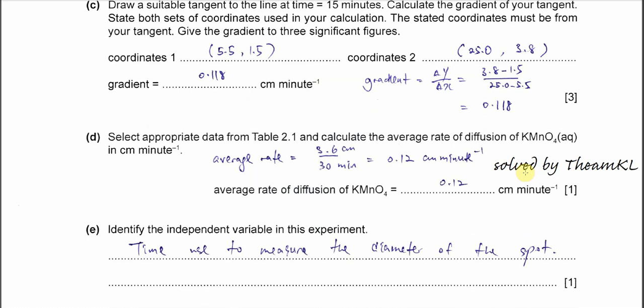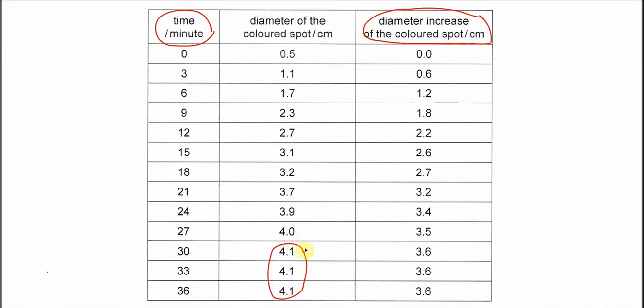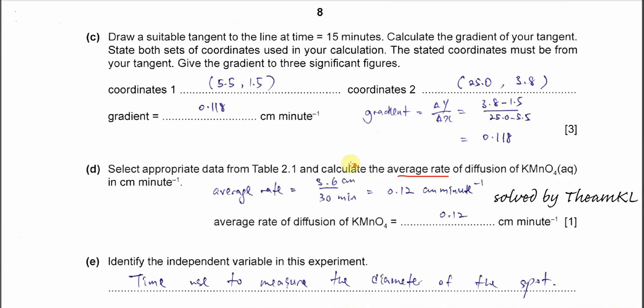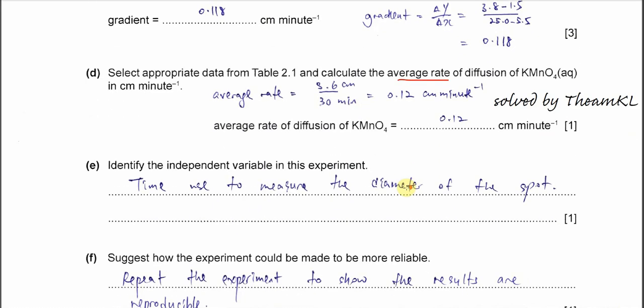Part D: select appropriate data from Table 2.1 and calculate the average rate of diffusion of KMnO4 in cm per minute. It's better for us to exclude the last two readings. In the table, as you can see, after 30 minutes, the values are the same. So we just use from 0 to 30. The cm that increased is 3.6. Therefore, you get 3.6 over 30 minutes, you get 0.12 cm per minute.